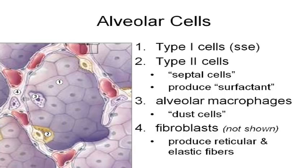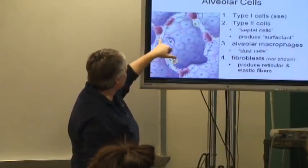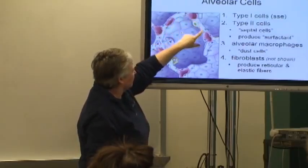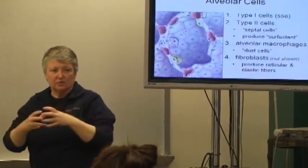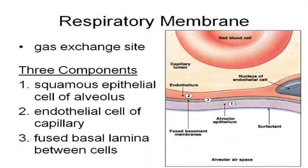But most of the time, these alveolar macrophages do a good job. And then fibroblasts, you don't see them, but in between the alveoli there's capillary, there's the alveolus, and then all this stuff in here, there are fibroblasts producing the elastic and reticular tissues because the lung has a great capacity to expand and contract as inhalation and exhalation occur. And that's because of those elastic molecules.